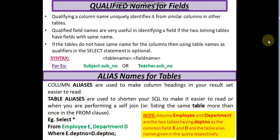For example, if you have two tables — subject and teacher — where sub_no (subject number) is a common column in both tables, when you are trying to join these two tables there might be some conflict. Since sub_no is present in both tables, you have to mention the table name, dot, then the column name — for example, subject.sub_no or teacher.sub_no. Qualified names are usually used with columns that have the same name in both tables in a database.